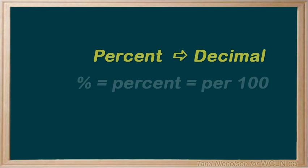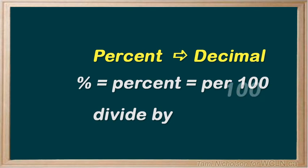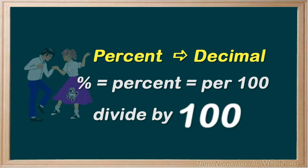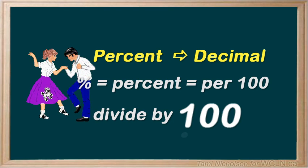Remember, to turn a percent to a decimal, you divide by 100. Do the decimal dance — move the decimal point two spaces to the left.